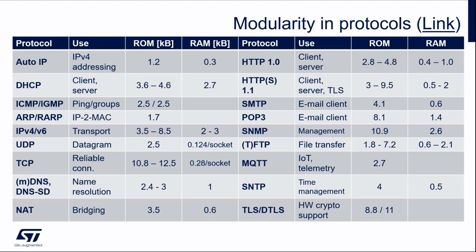This slide lists the protocols supported by NetX Duo — it's not fully complete, so follow the link in the top right corner for the full list. AutoIP is a way to automatically assign an IP address if the device cannot get one from the network — for example, if the DHCP server is not replying — and the stack assigns itself an address in the 169.254.0.0/16 range.